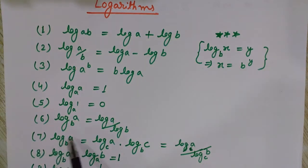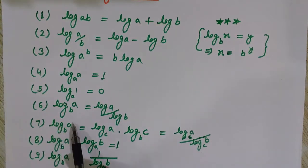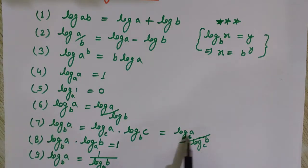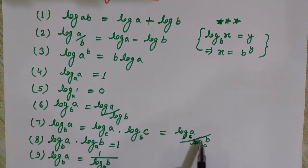Now let's come to the seventh formula. Log of a to the base b is equals to log of a to the base c, multiplied by log of c to the base b. You can also write it as log of a to the base c divided by log of b to the base c. This means if you want to change the base from b to c, you write log of a to the base c divided by log of b to the base c.